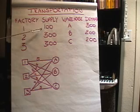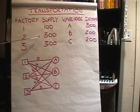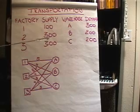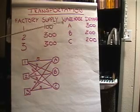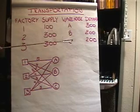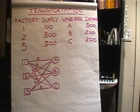Let's say that the supply of each factory is 100 units, 300 units, and 300 units from one, two, three respectively, and the demand at the warehouses are 300 units, 200 units, and 200 units at warehouse A, B, C respectively.